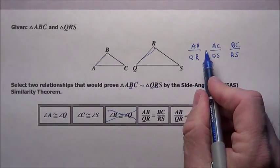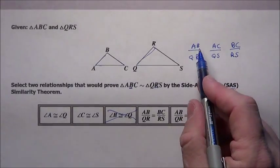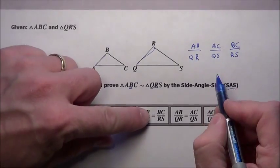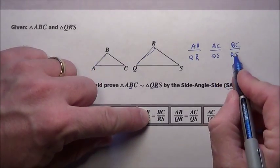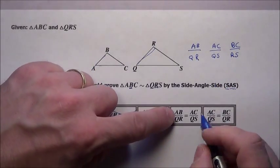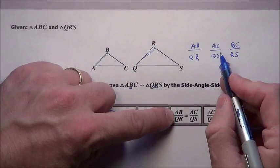So I need it to say something about this. Let's see if I have any of this. It has AB to QR is equal to BC to RS. That's good, so that's a possibility. AB to QR, AC to QS, there's a good possibility.